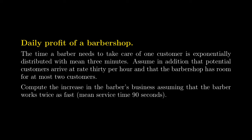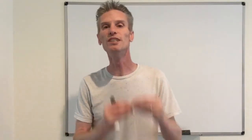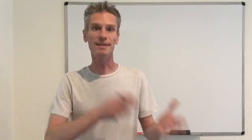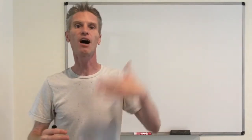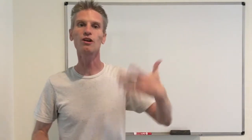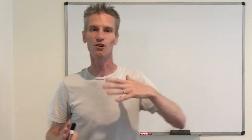So the goal is to compute the increase in the barber's business, assuming now that the barbershop can work twice as fast — meaning that now the service time is on average 90 seconds per customer. Before we write any equations, I need to clarify that by increase in business, I don't mean increase in terms of dollars a month. I mean a factor by how much he's going to multiply his profit per day, assuming that he could work twice as fast.